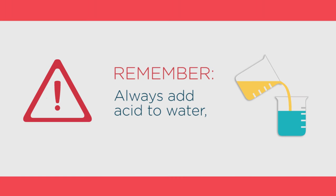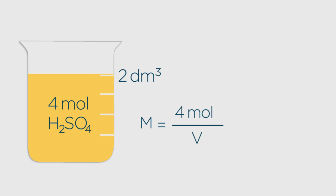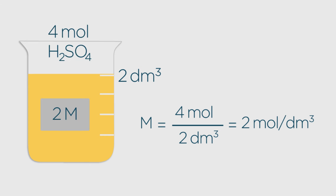In this rather large beaker, which contains 2 decimetres cubed of solution, has been added 4 moles of sulphuric acid. 4 moles divided by 2 decimetres cubed equals 2 moles per decimetre cubed. Or you'll often hear chemists say, 2 molar. Simple, isn't it?